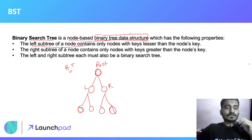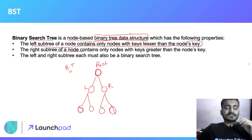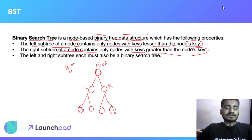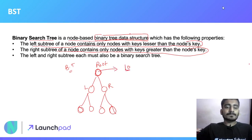Basically, the left subtree of a node contains only nodes whose keys are lesser than the node's key, and the right subtree contains only nodes whose keys are greater than the node's key. For example, if the root value is 10, then everything in the left subtree will be less than 10, and everything in the right subtree will be greater than 10.